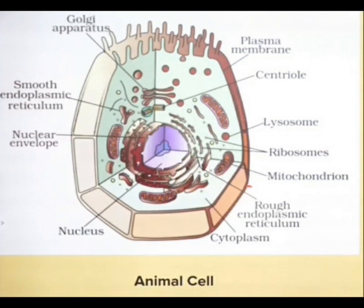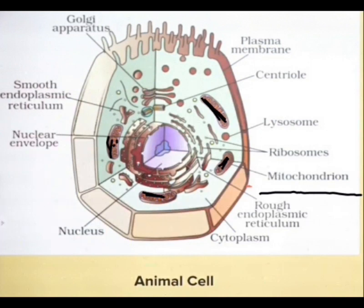Now let us look at the mitochondria. They are the powerhouse of the cell because they produce ATP, which is the energy molecule of the cell. The mitochondria also have their own DNA and they have ribosomes in them.